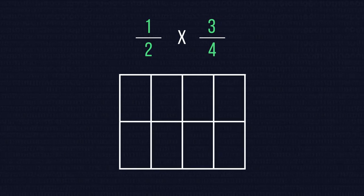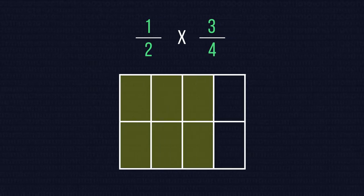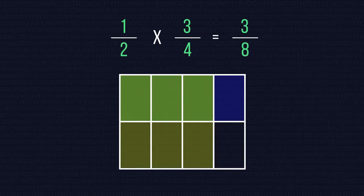Consider 1 half multiplied by 3 quarters. As we can see if we fill 3 quarters of the grid yellow we fill 6 boxes of the 8. When we fill 1 half of the same grid blue we fill 4 boxes. Then our overlapping area is green and we have 3 of these. Therefore the shaded area is 3 over 8. So this must be the product of 1 half and 3 quarters.